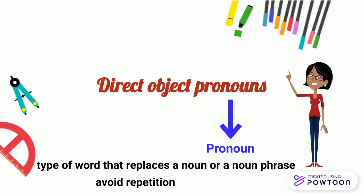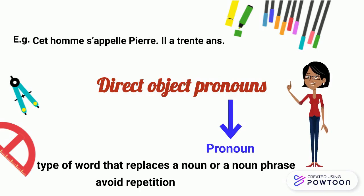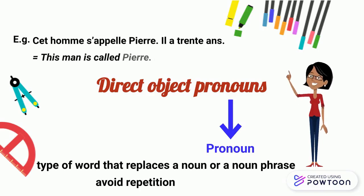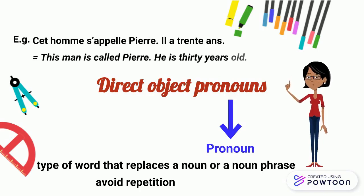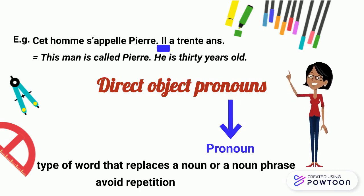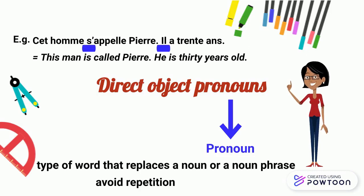For instance, cet homme s'appelle Pierre. Il a trente ans. This man is called Pierre. He is 30 years old. Il is a pronoun and I use it to avoid repeating cet homme. Note that s' is also a pronoun, a reflexive one.